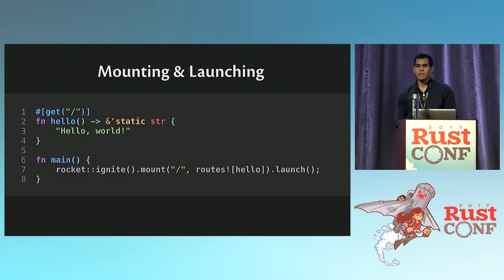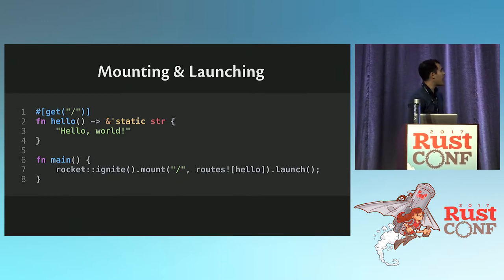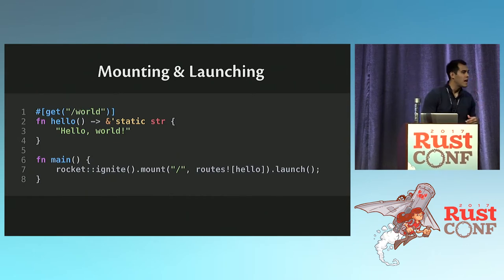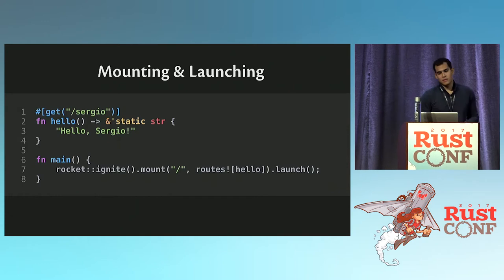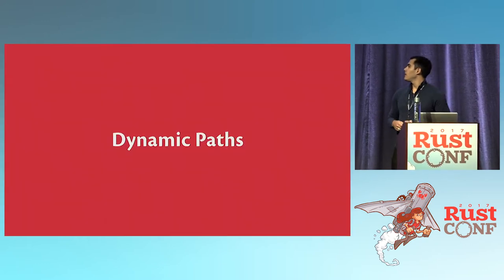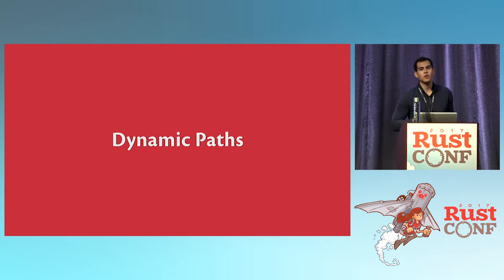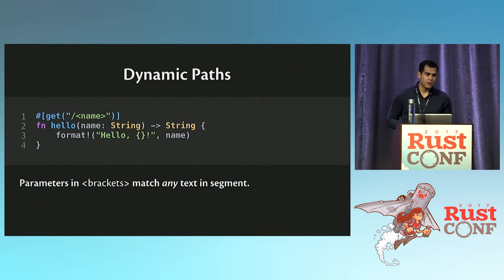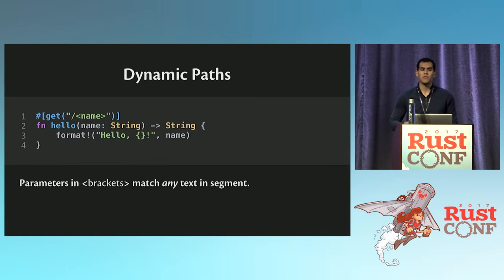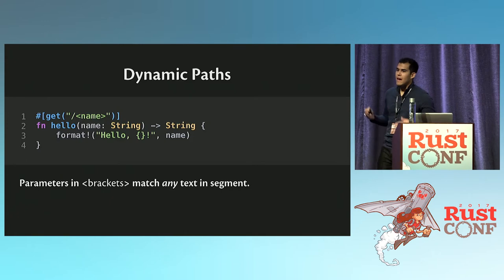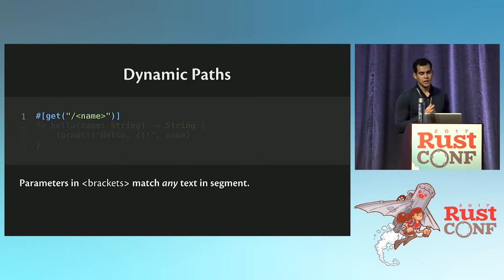We can't really do anything particularly interesting yet. We can change the path — for instance, from slash to slash world, or slash Sergio. But ideally we can do more, and of course you can. I want to talk about dynamic paths: as the name implies, this allows you to have path segments that are dynamic — the user tells you what the value for that path segment is. Here is our reworked hello world example, and you can see we have a name parameter in brackets in the route attribute, making something dynamic. Whatever the user types at that path segment will be the value that the name parameter gets.